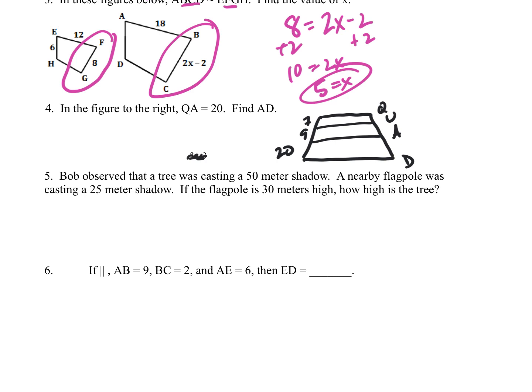Okay, on number 4, it says in the figure to the right, QA equals 20. Find AD. So this guy right here. So I'm going to set up a proportion that's going to go this over this equals this over this. So 7 plus 9 is 16 over 20 is equal to 20 over X. Cross multiply 16X equals 400, divide by 16, and 400 divided by 16 is 25.